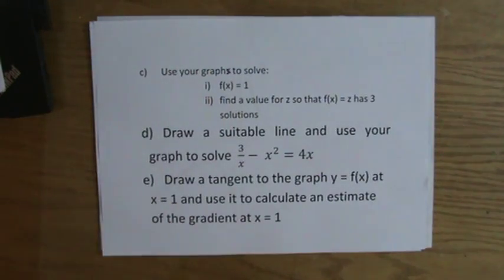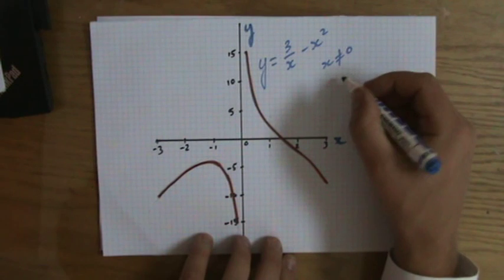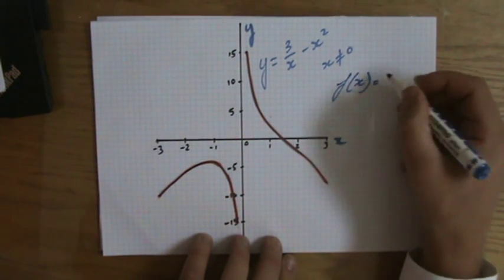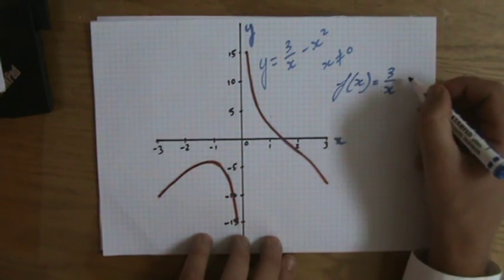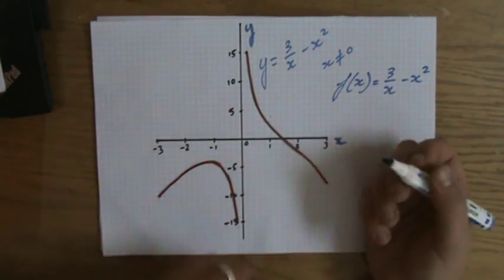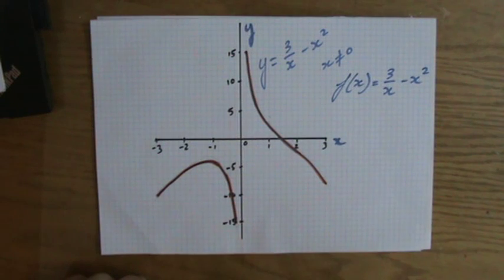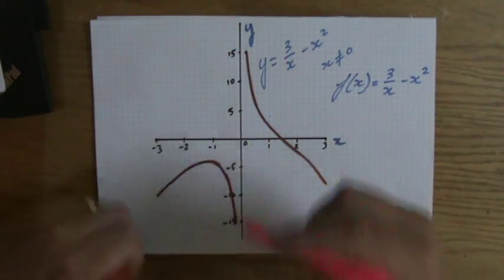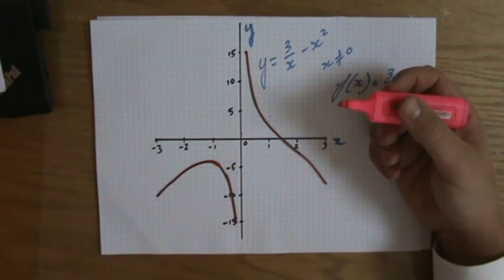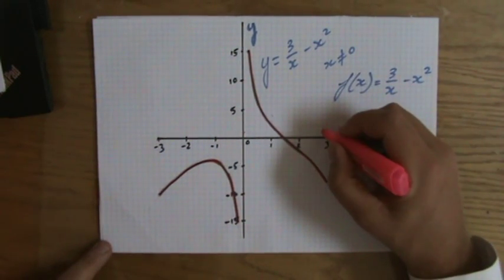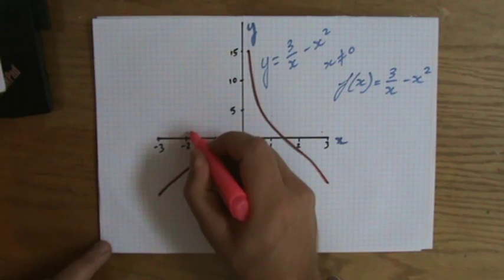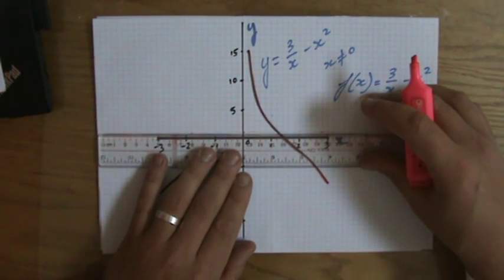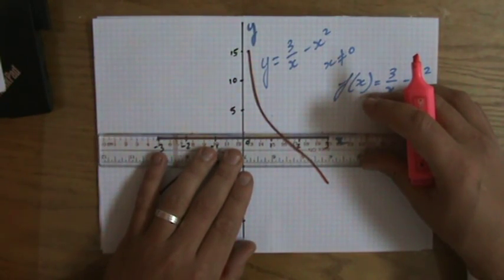Let's start with the first one: use your graph to solve f(x) = 1. f(x) equals 3/x - x², and the question asks when is that equal to 1? When is f(x) = 1? When is y = 1? Well, where is y = 1 on the graph? y is 1 over here, and also over there, because the line y = 1 is a horizontal line.